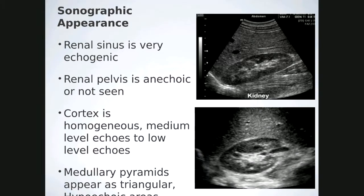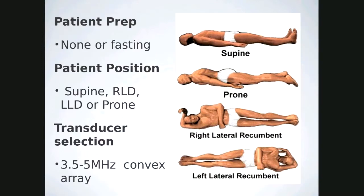The cortex is homogeneous, medium to low-level gray. The pyramids are hypoechoic to anechoic, triangular in shape, and equally spaced throughout the cortex. There is no specific patient prep for kidneys, though imaging is easier when the patient is fasting and hydrated to reduce bowel gas. Patient position: supine, right or left lateral decubitus, and often prone. Start with a 3.5 megahertz transducer; use the highest frequency allowing adequate penetration. Consider coming from the back to improve resolution by getting closer to the organ.